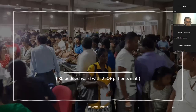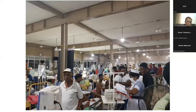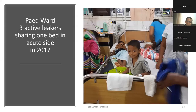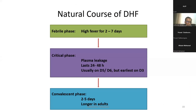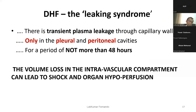In 2017, the male medical ward of a hospital that was 80-bedded had 250-plus patients; the pediatric ward had to keep up to three DHF patients in one bed. DHF is differentiated from DF by the presence of a critical phase — a transient plasma leak through capillary holes, occurring only to the pleural and peritoneal cavities for generally not more than 48 hours.